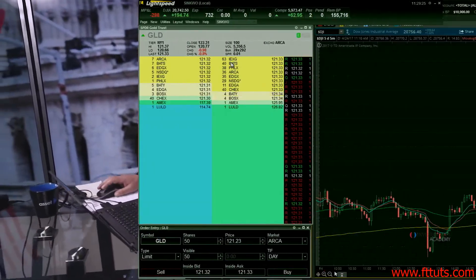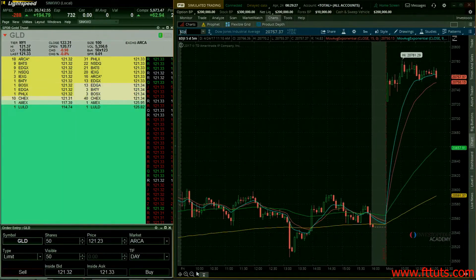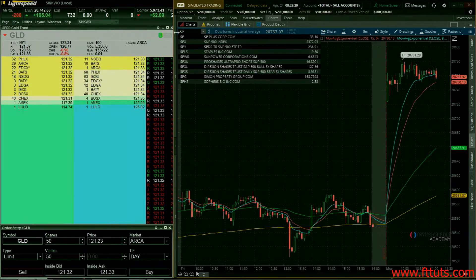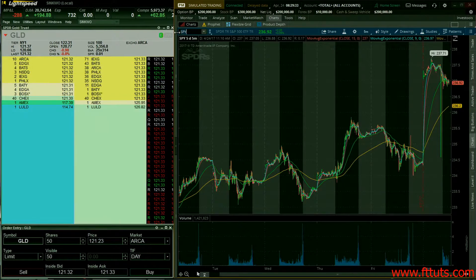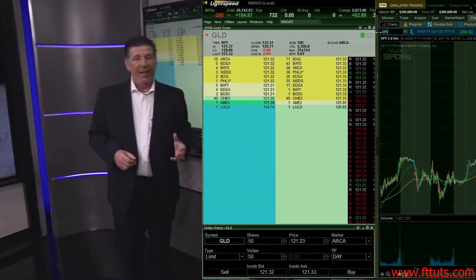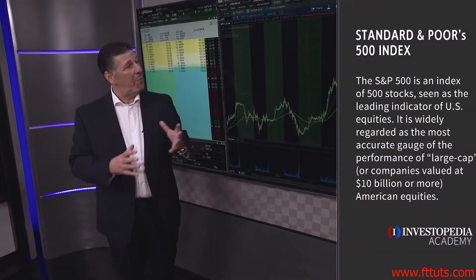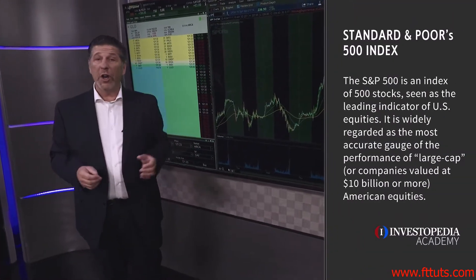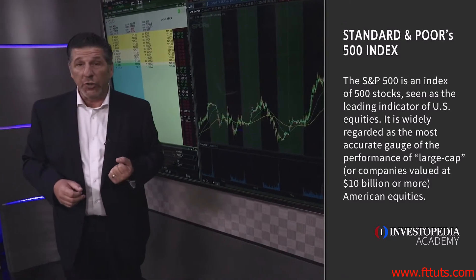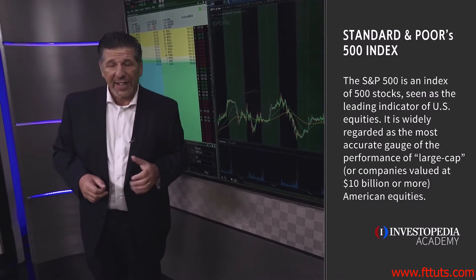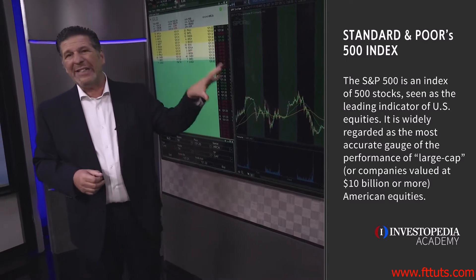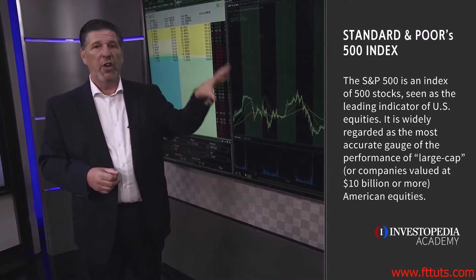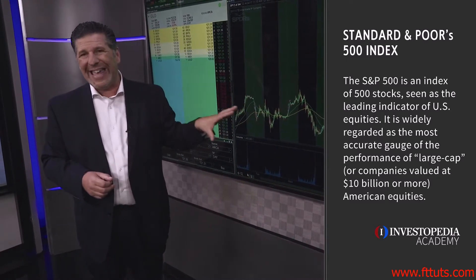What we have to watch and pay attention to at all times is what we call the Standard & Poor's 500. Here is a chart of the Standard & Poor's 500. This gives us a much better view of what the overall market is doing — it has 500 stocks in it. As a matter of fact, the Standard & Poor's 500 is something that you must have up on your charts all day long.